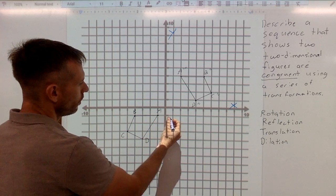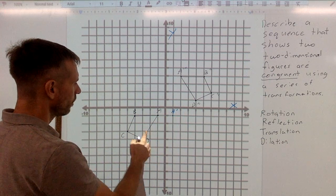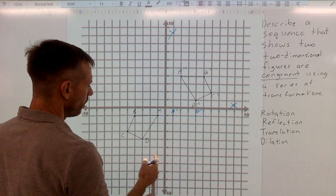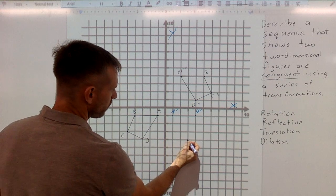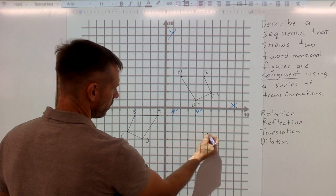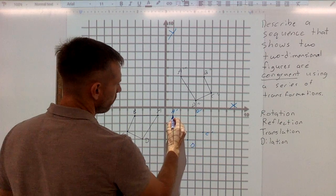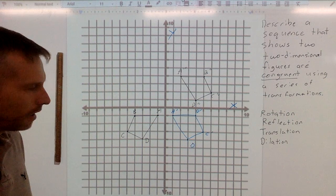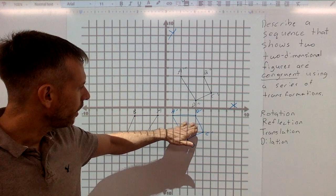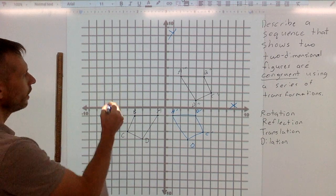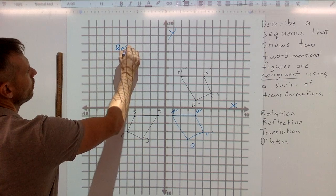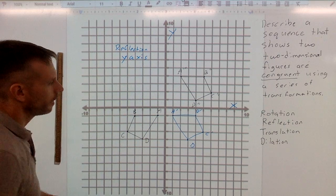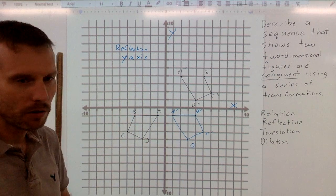I'm going to reflect this image over the Y axis, and my new A is here, and my new B is here, and my D is here, and my C would be here. So, of course, I hope that you're using a straight edge, but for the sake of time, this is my new image now. Now I need to get from here to here. So, first off, we have done a reflection over the Y axis. We reflected the image over the Y axis.